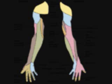Dermatome C4 supplies the top of the acromioclavicular joint, which is the shoulder area, the clavicular area, and the upper scapular area. Dermatome C5 supplies the lateral antecubital fossa, which is the deltoid area, and the anterior aspect of the entire arm to the base of the thumb.